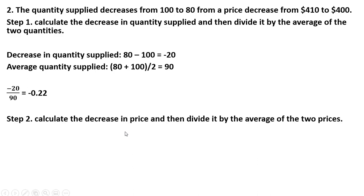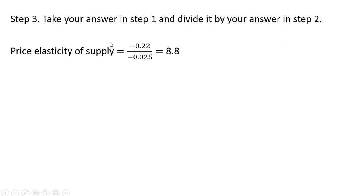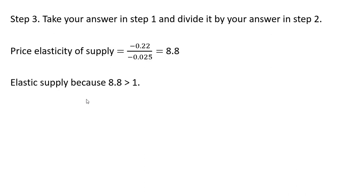Moving on to step 2, we calculate the decrease in price and divide it by the average of the two prices. We have a $10 decrease, and the average of the two prices is $405. So minus 10 divided by 405 is minus 0.025. In the final step, we take minus 0.22 divided by minus 0.025, giving a price elasticity of supply of 8.8. This is a highly elastic supply — a 1% increase in price would cause quantity supplied to increase by almost 8.8%.